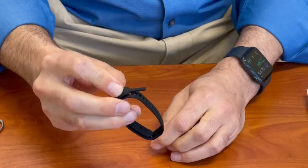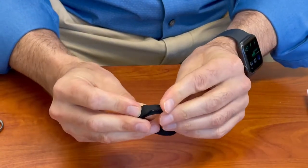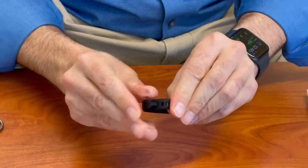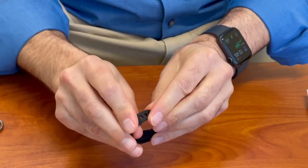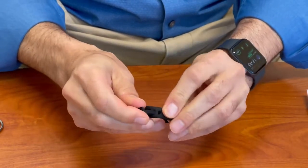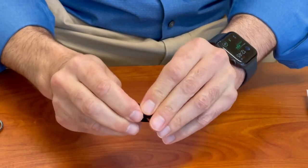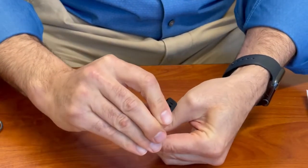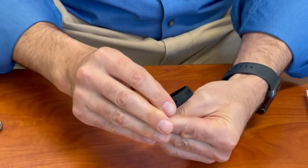And then repeat the process over here on the other side, find the right perforation, place it down and through, and then go through the same locking process on that side.